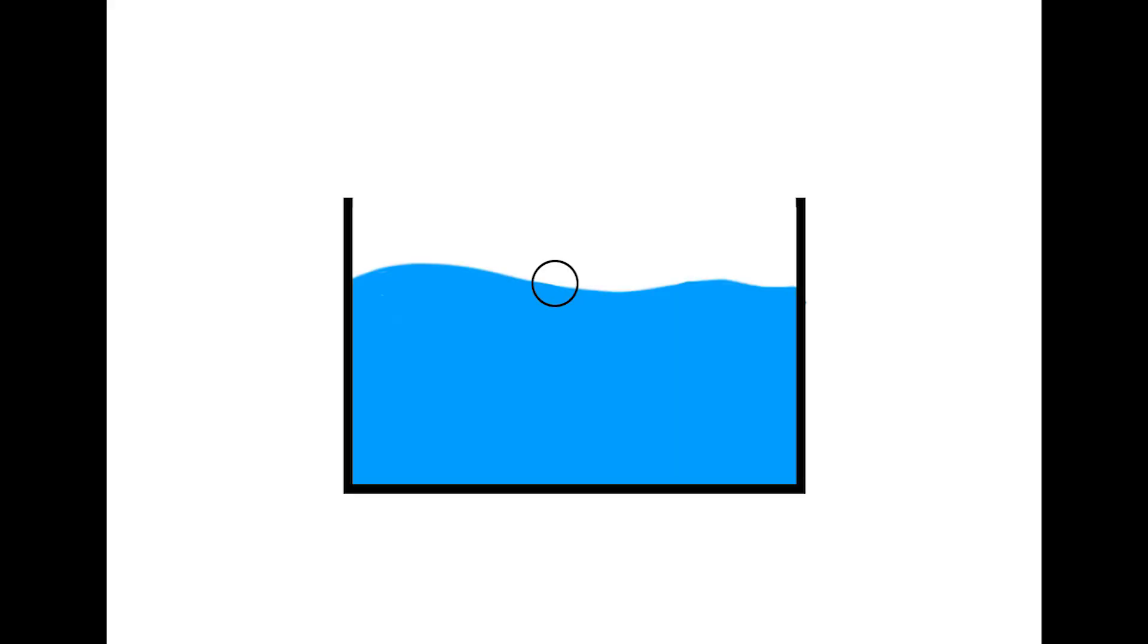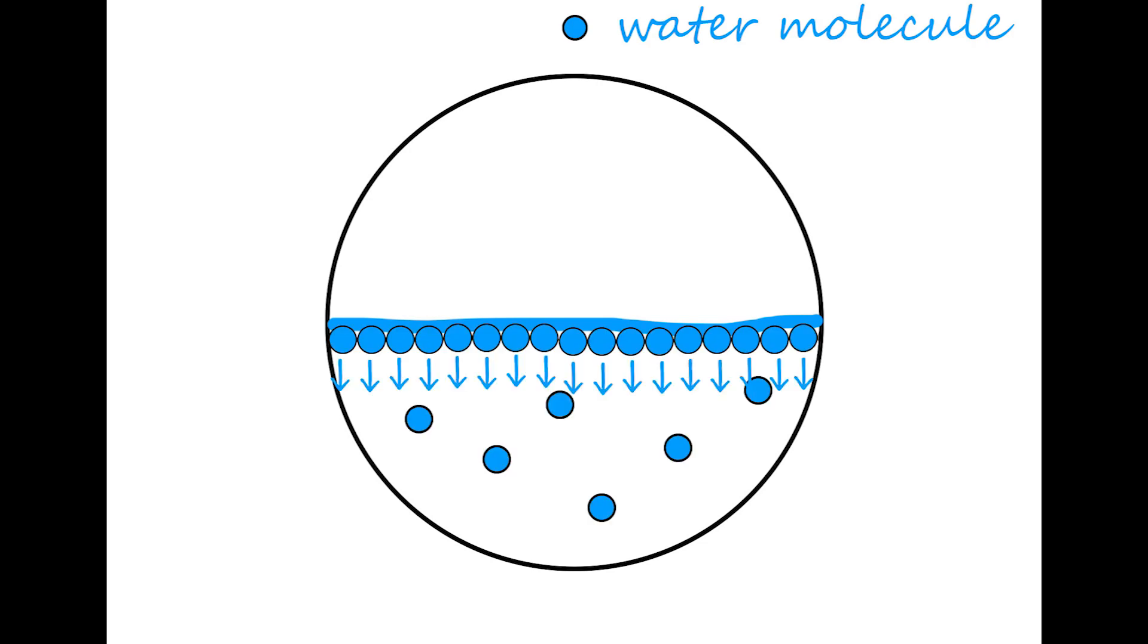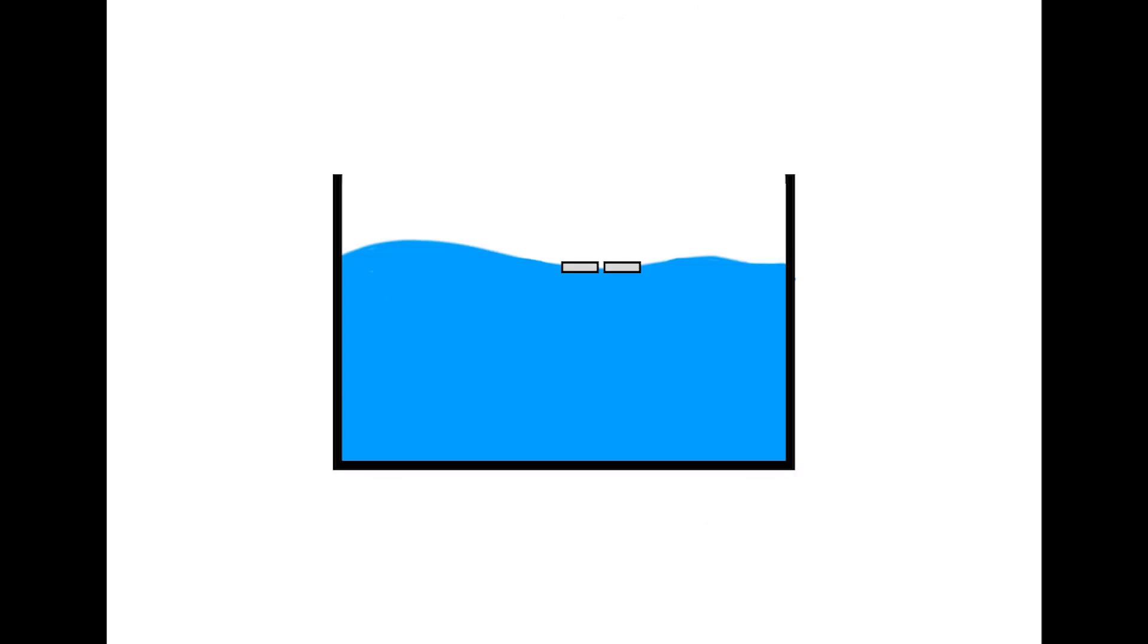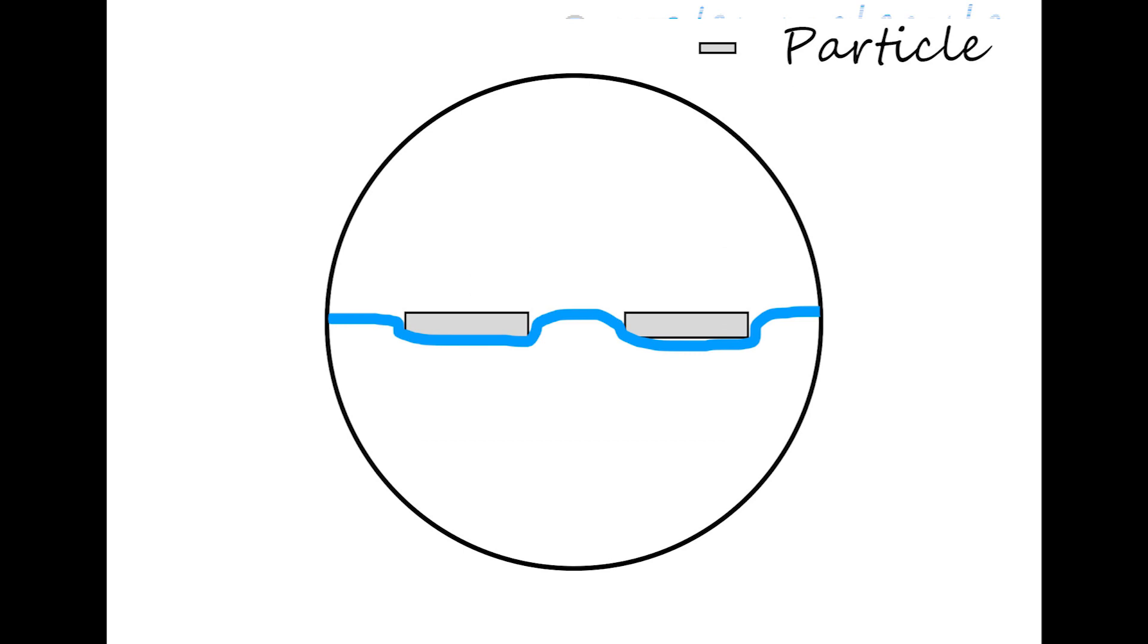The liquid surface has a tendency to decrease its surface area because the molecules at the surface are pulled by other molecules in the liquid, which form the surface tension. When the particles float on the surface of water, the surface bends around the particles. But water doesn't like to bend, so it forces the particles to stick together to reduce the surface area and reach a state with lower energy.